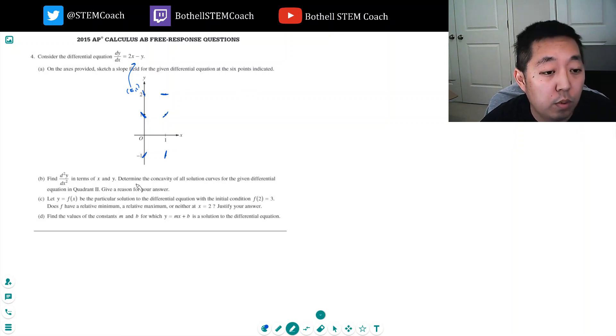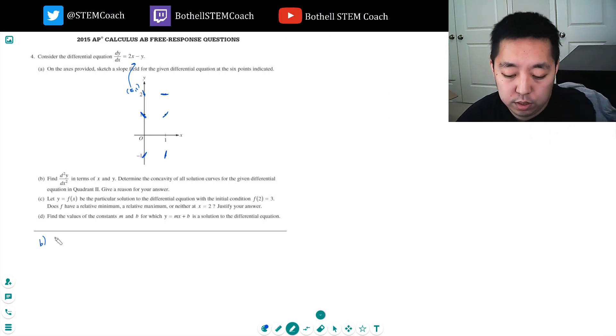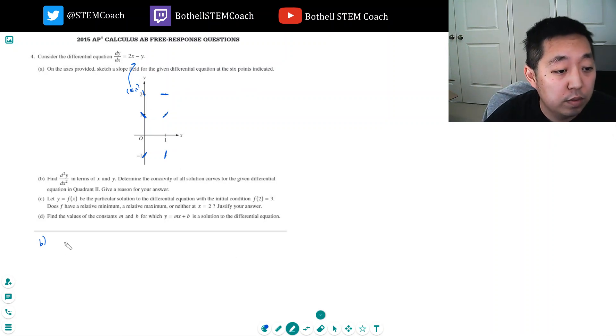Find the second derivative in terms of x and y. Determine the concavity of all the solution curves for the differential equation in quadrant 2 and give a reason for an answer. Okay, so the second derivative, I should take the derivative of this, that'll give me the second derivative. This is the first derivative and I take the second one. The derivative of this is just 2 with respect to x minus the derivative of y is dy/dx. But I know dy/dx is this, so this is 2 minus (2x minus y), so that's equal to 2 minus 2x plus y.